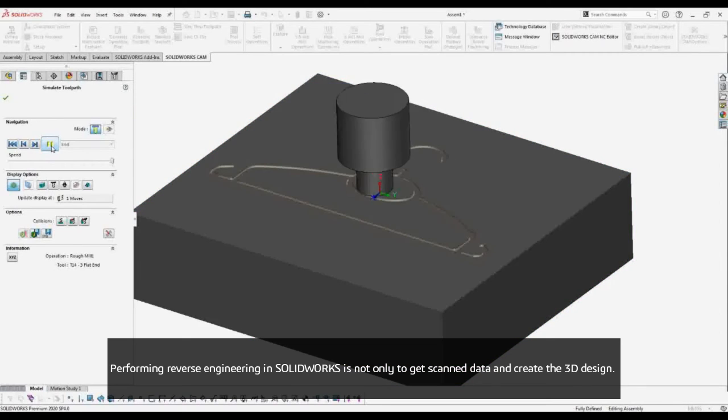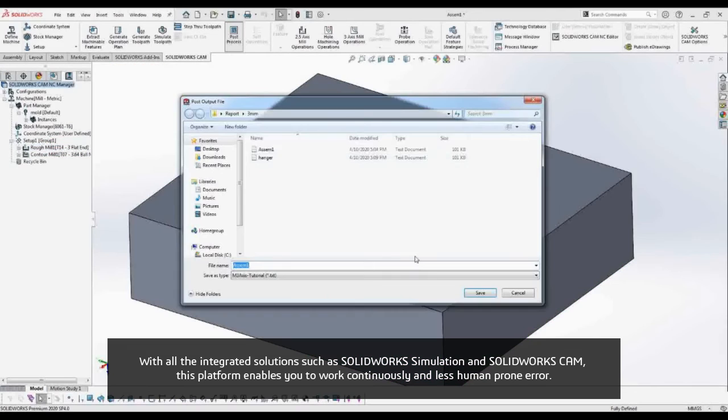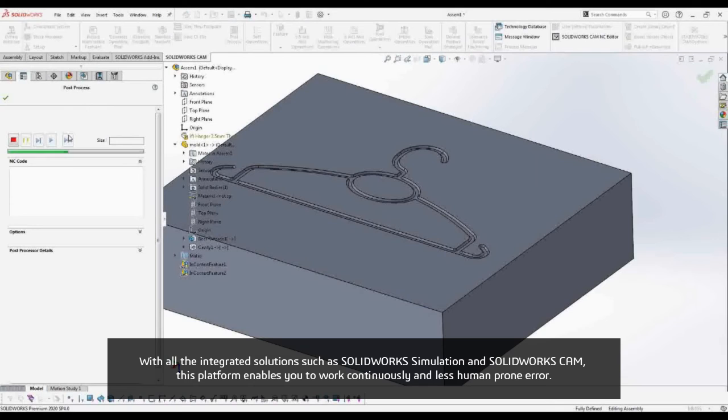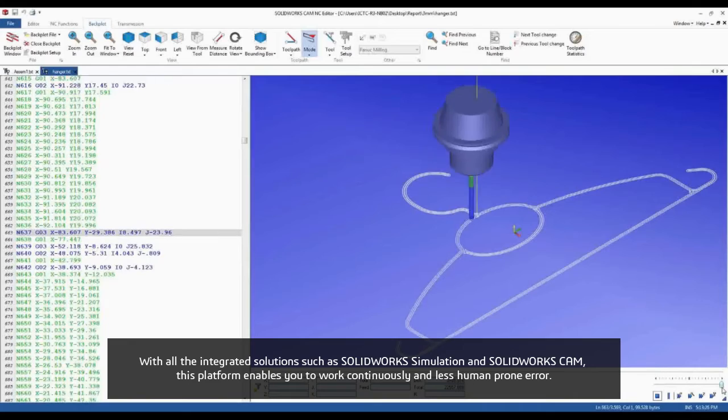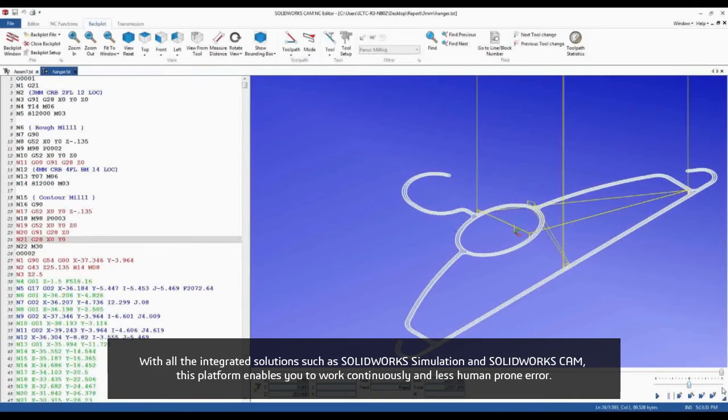Performing reverse engineering in SOLIDWORKS is not only to get the scan data and create the 3D design. With all the integrated solutions such as SOLIDWORKS Simulation and SOLIDWORKS CAM, the platform enables you to work continuously with less human errors.